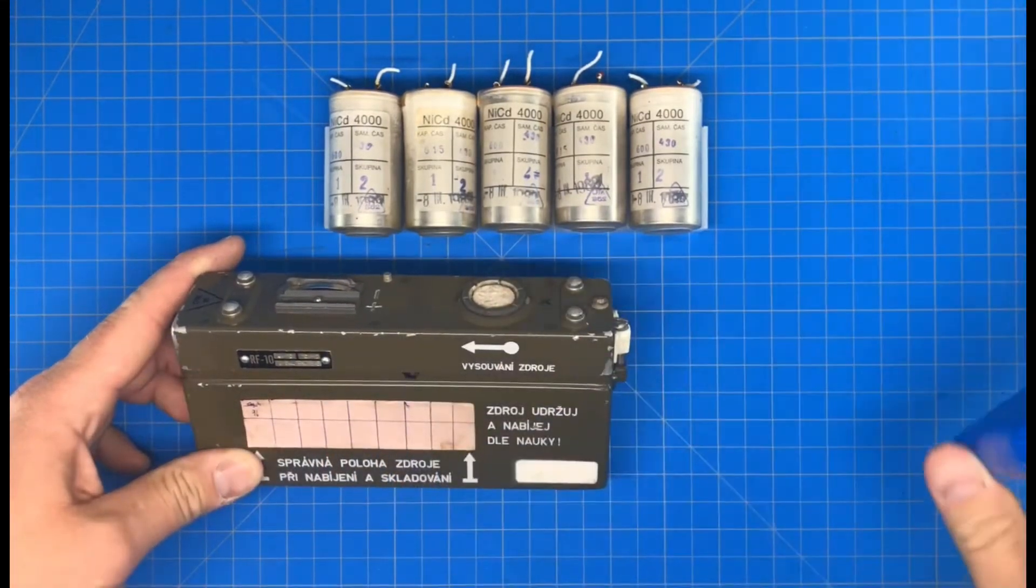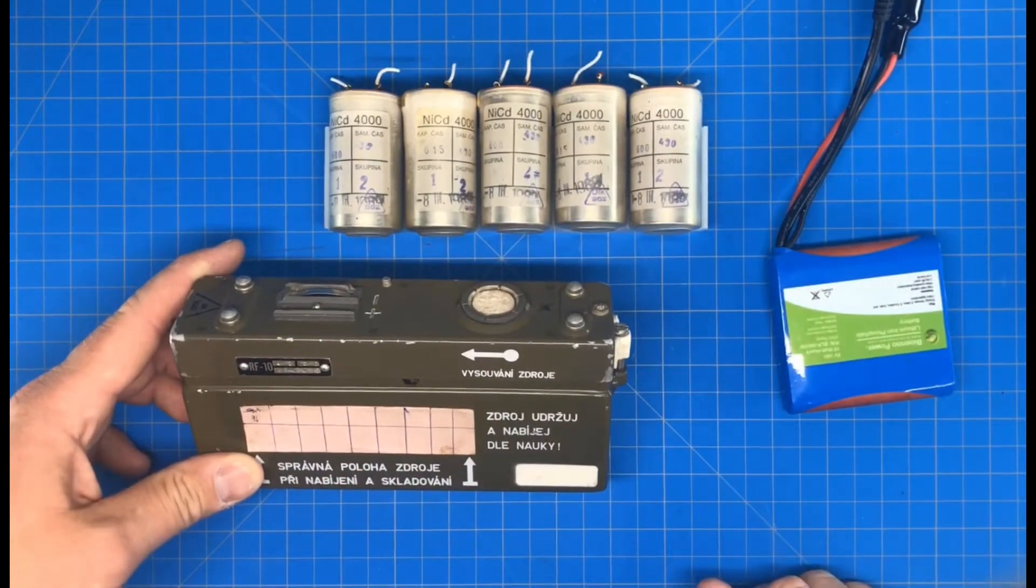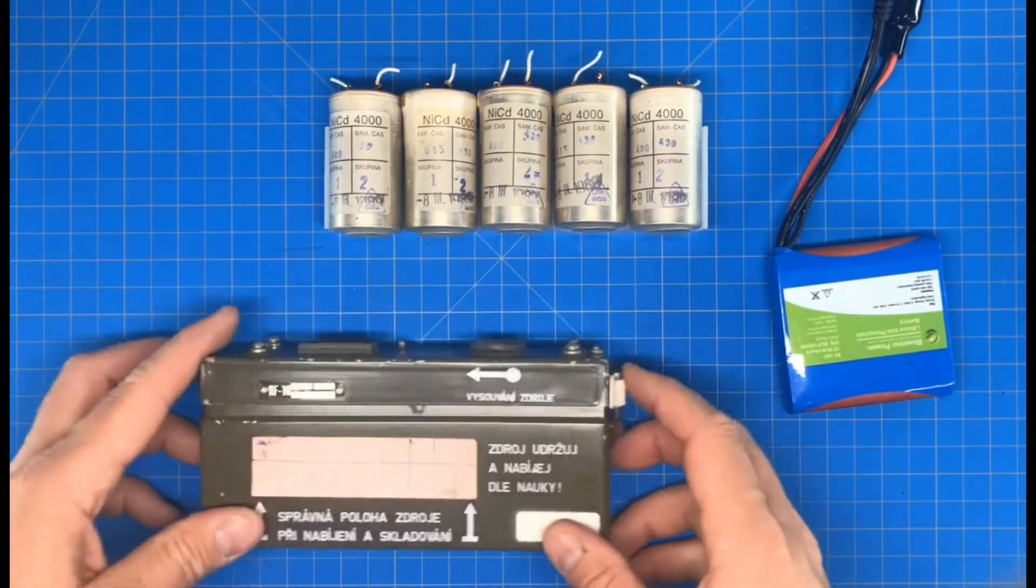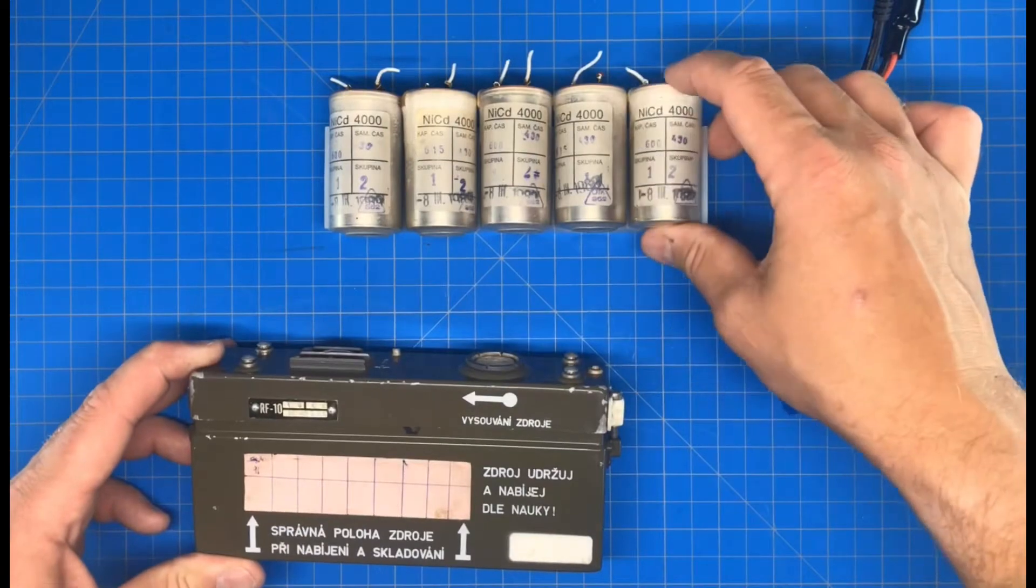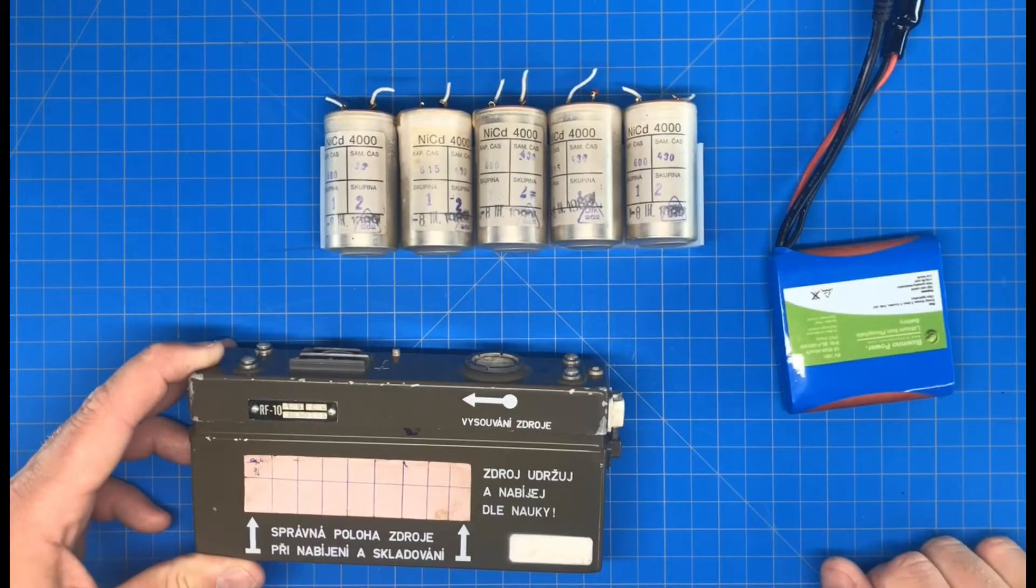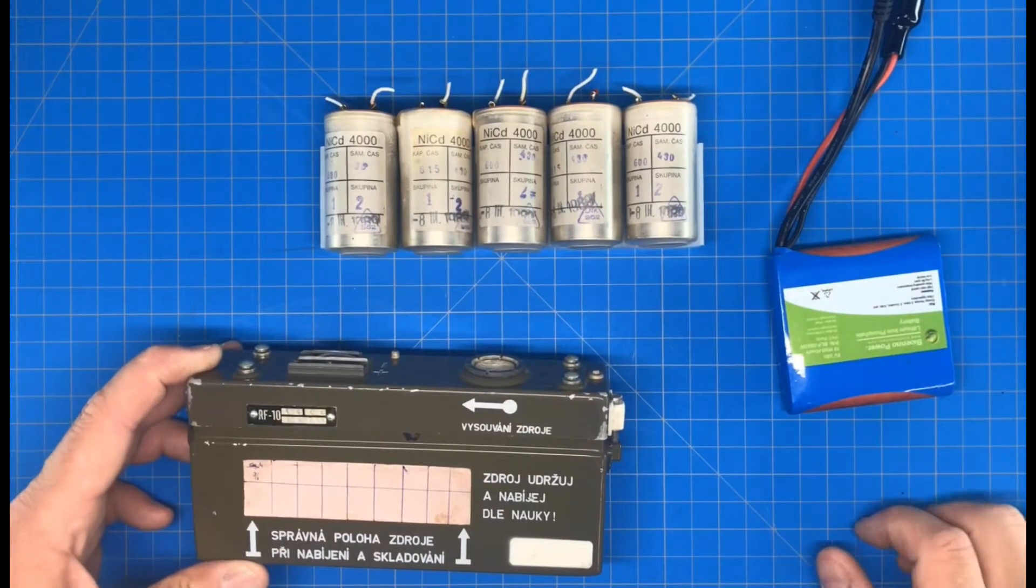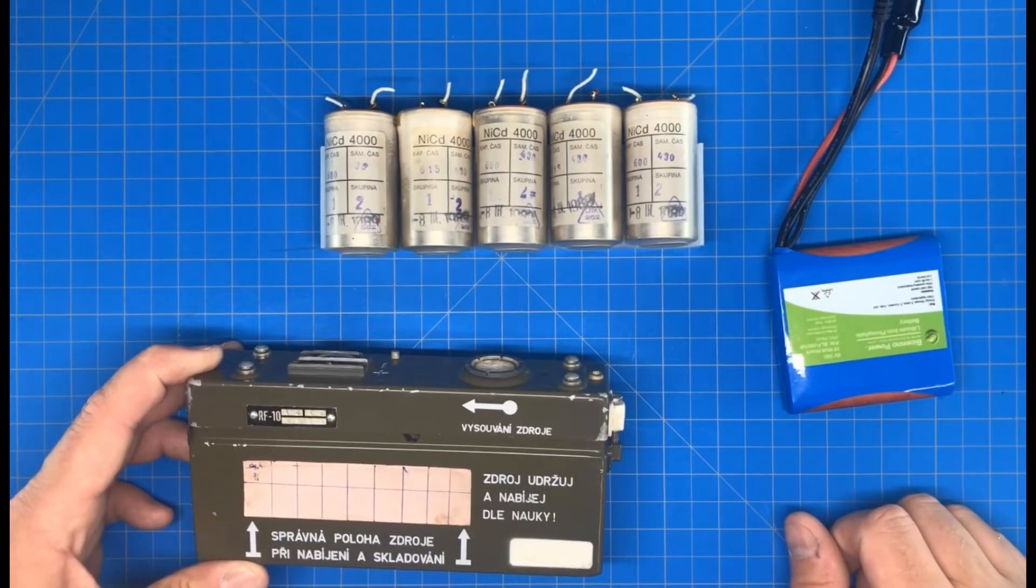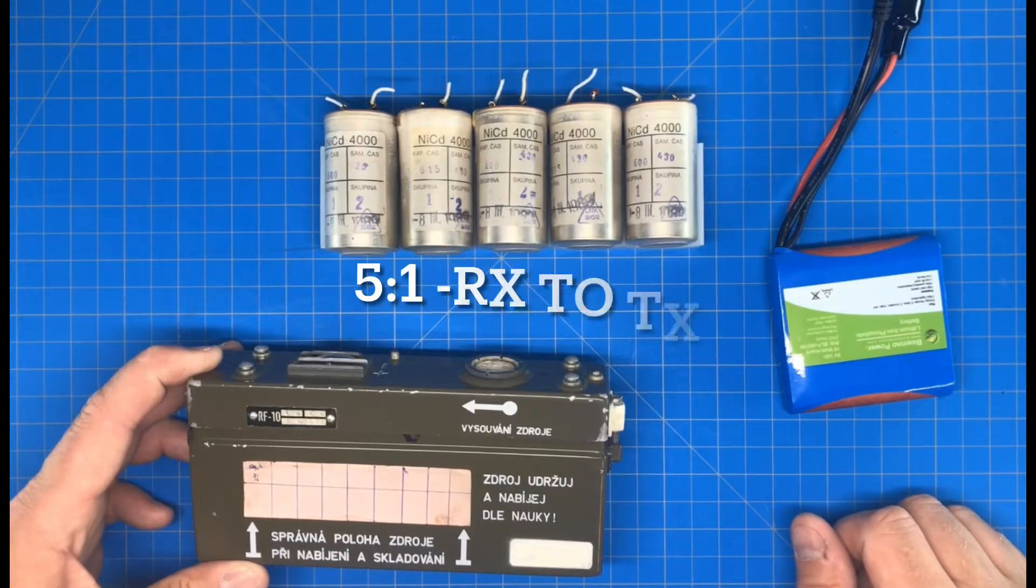That will reduce my run time by about two and a half hours. Originally, with this 4 amp hour pack here, it would have been about 10 hours of run time. So that would be 5 to 1 transmission to receive.